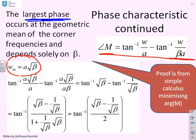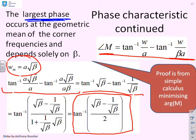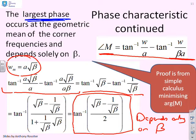If I substitute omega_m into the phase formula, I get tan to the minus 1 of (A root beta over A) minus tan to the minus 1 of (A root beta over A beta), which gives tan⁻¹(root beta) minus tan⁻¹(1 over root beta). Using the rules to add inverse tans together, you can reduce this to the nice formula: tan to the minus 1 of (root beta minus 1 over root beta) all over 2. The key thing is that it depends only on beta — A doesn't come into it. So the largest phase depends solely on the ratio of the pole to zero and nothing else.